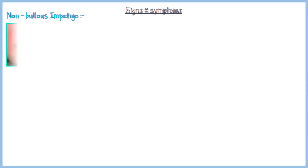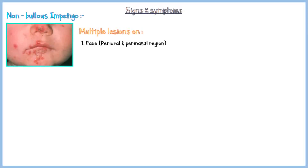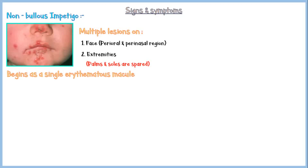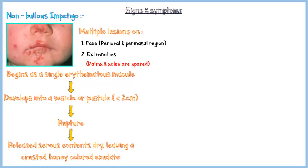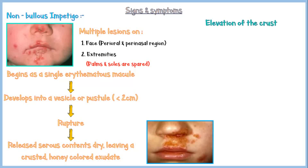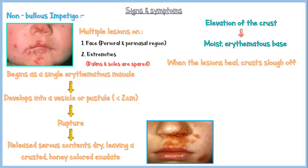Patients with non-bullous impetigo may present with multiple lesions on their face, especially in the perioral and perinasal regions and extremities. Palms and soles are spared. Non-bullous impetigo begins as a single erythematous macule that develops into a vesicle or pustule less than 2 cm in size. These vesicles then rupture and discharge serous contents onto the skin surface. When the serous content dries, it becomes honey-colored crusts over the erosions, as indicated in this picture. Elevating these crusts reveals a moist erythematous base underneath. When lesions heal, these crusts slough off without scarring because only the epidermis is affected.